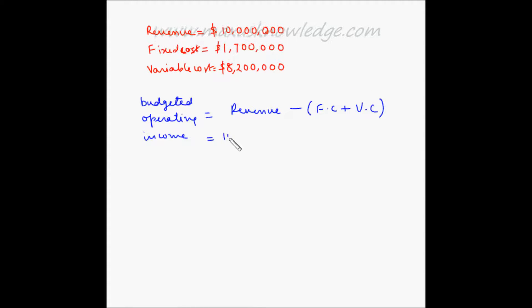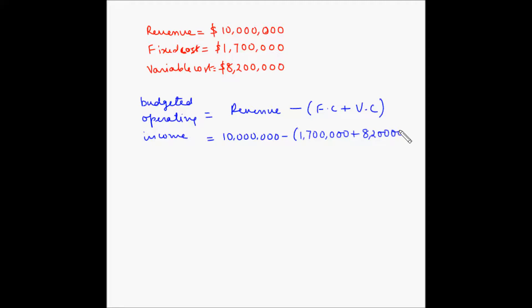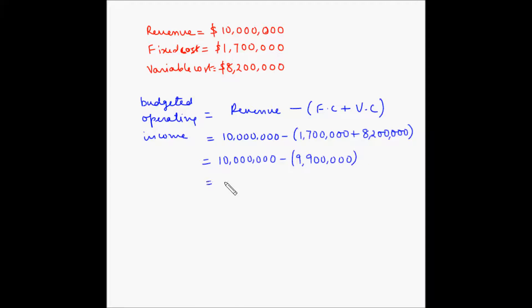So the budgeted operating income equals 10 million minus fixed cost plus variable cost, which is 1.7 million plus 8.2 million. That gives us 10 million minus 9.9 million, which equals 100,000 dollars. So this is the budgeted operating income.